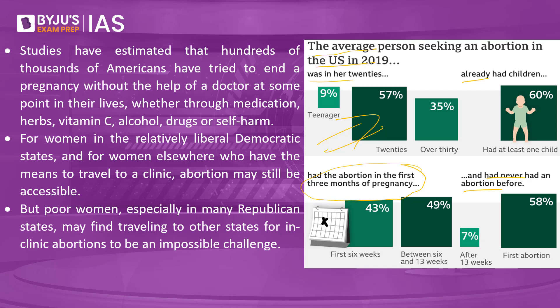Now let's discuss the impact of this judgment. Studies have estimated that hundreds of thousands of Americans have tried to end a pregnancy without a doctor's help — through medication, herbs, vitamin C, alcohol, drugs, or self-harm. Even before the law was overturned, people were using their own methods; now this could increase further. Laws against abortion put people at risk by pushing them underground, limiting access to safe abortions. This could lead to a rise in dangerous methods, unqualified practitioners performing procedures, and online pharmacies selling abortion pills.